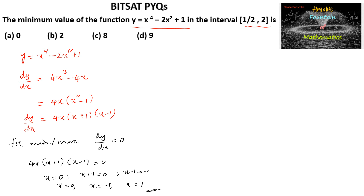Since our interval is [1/2, 2], x = 0 does not belong to [1/2, 2] and x = -1 also does not belong to it. So we have only one critical point: x = 1.